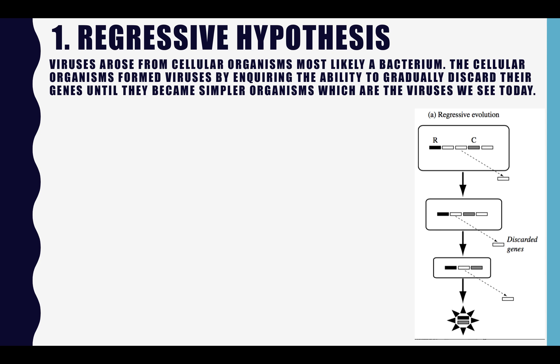The first hypothesis is the regressive hypothesis. This suggests that viruses arose from cellular organisms, which was most likely a bacterium. The cellular organisms formed viruses by acquiring the ability to gradually discard their genes until they became simpler organisms, which are the viruses we see today. The evidence that viruses arose from bacteria are present in bacteria which show similar characteristics to that of a virus. These are known as virus-like bacteria.